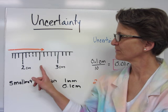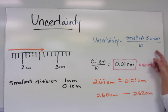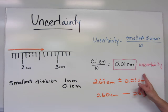To determine the uncertainty for this particular device, you take your smallest division and divide it by 10. So we have 0.1 centimeters divided by 10 to give us an uncertainty of 0.01 centimeters.